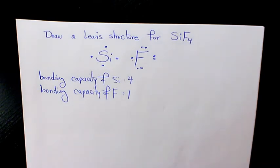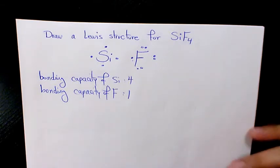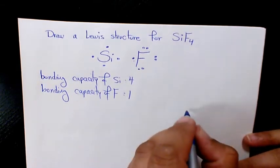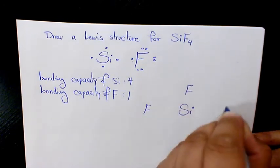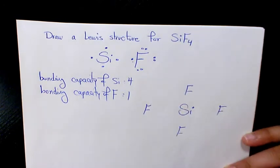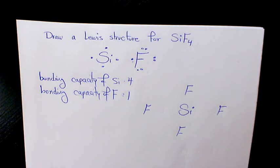Fluorine is the surrounding atom. What we need to do is write the symbol of the central atom and then arrange the symbols of the other atoms around it. So it's going to be Si, F, F, F, and F. Then we need to add up the number of valence electrons available in each element.